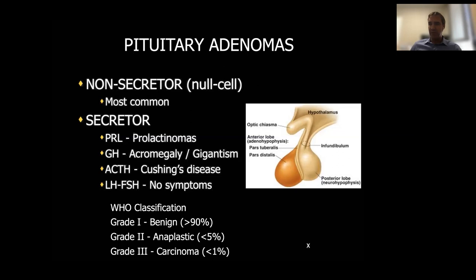Among secretory tumors, there are three major categories: prolactinomas, which produce prolactin; growth hormone adenomas, which produce acromegaly or giantism; and ACTH tumors, which cause Cushing's disease. LH/FSH tumors, or gonadotroph adenomas, cause no symptoms, so we now include them in the non-secretory category because they don't produce any hypersecretory symptoms.